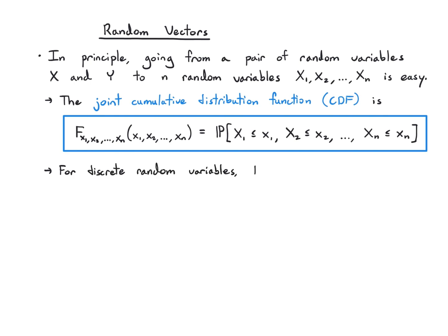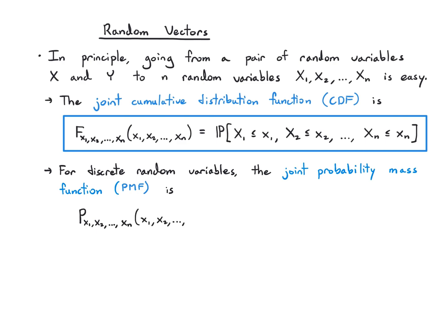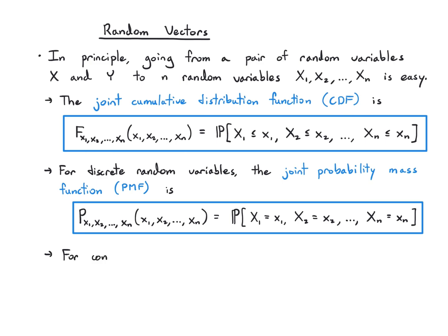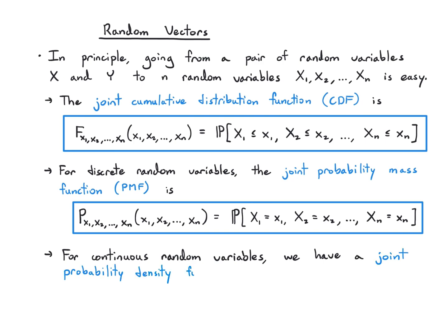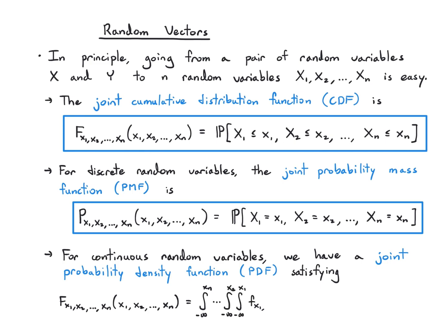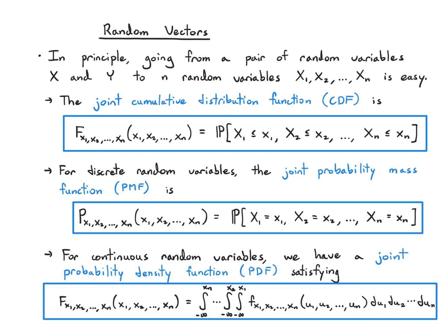From there we can define the joint PMF for discrete random variables — a capital P of x1, x2, through xn — which records the probability that those random variables take the exact values little x1 up to little xn. We can also define a joint PDF, which you can think of as the n-fold partial derivative of the joint CDF for continuous random variables, or as a function such that when you integrate it you recover the joint CDF. These definitions, while they use a lot of notation, have the same form we're used to seeing with pairs, so the framework carries over to n random variables.